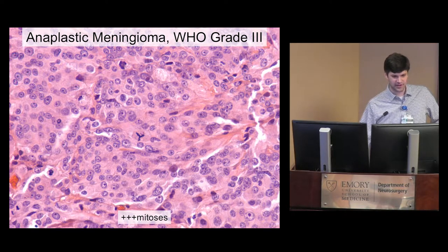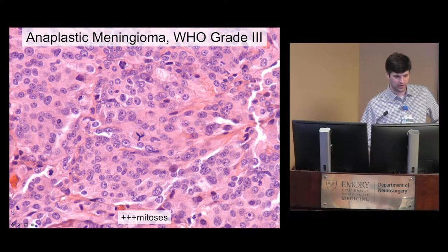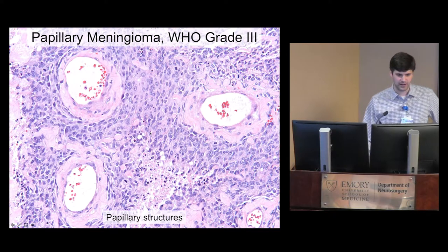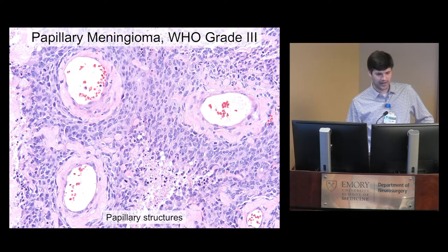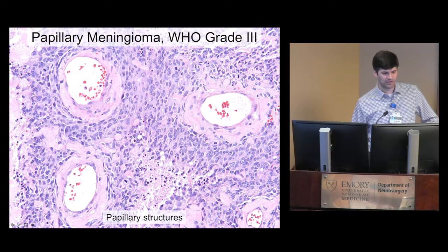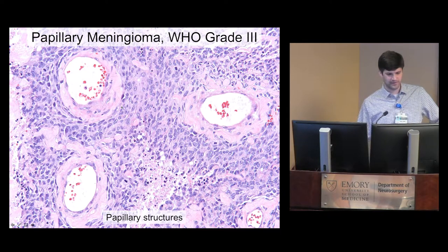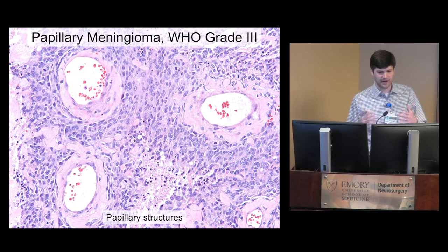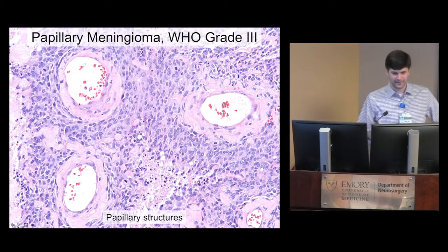In anaplastic meningioma, the tumor cells start to look even worse and less like a meningioma, with a striking mitotic count — six mitotic figures in a single field, with an atypical mitotic figure visible as well. Papillary meningiomas are also WHO grade 3 by definition. Papillary means the tumor cells are clustered around a central vessel, and there may be necrosis along the periphery — like a cauliflower or broccoli cut in section with necrosis around it.